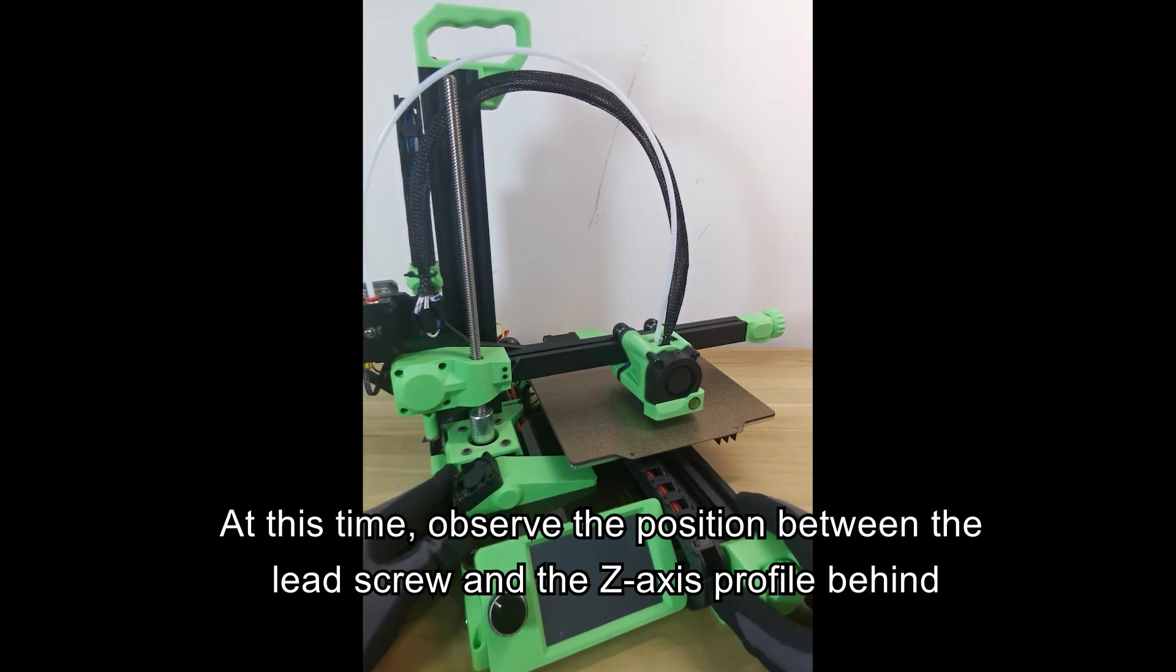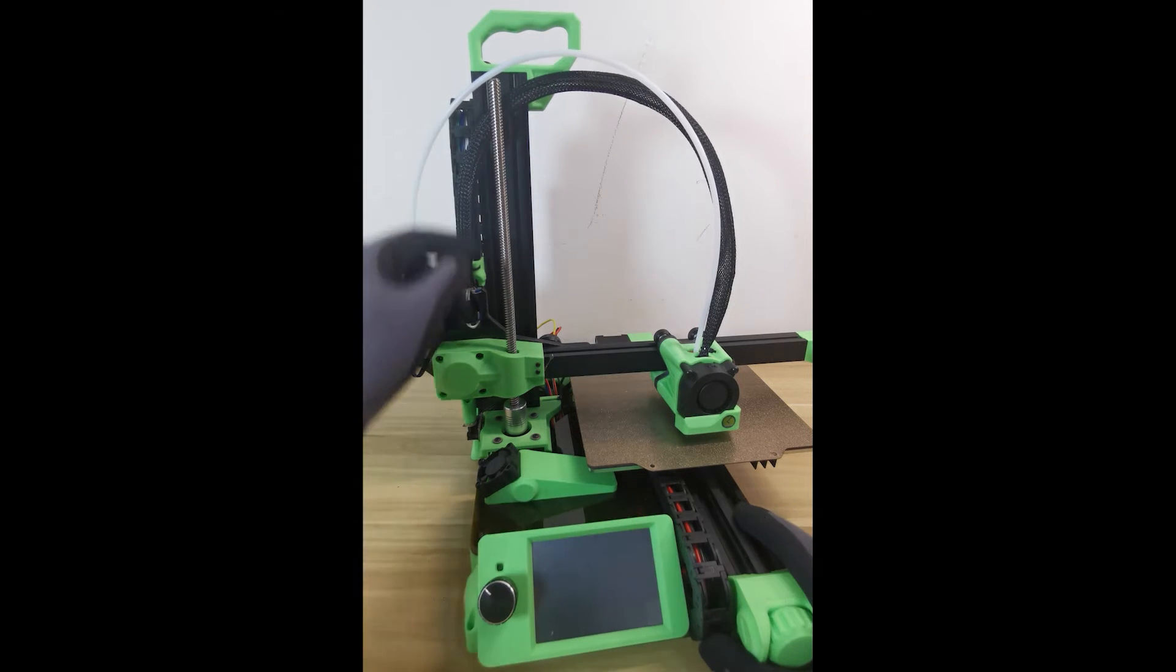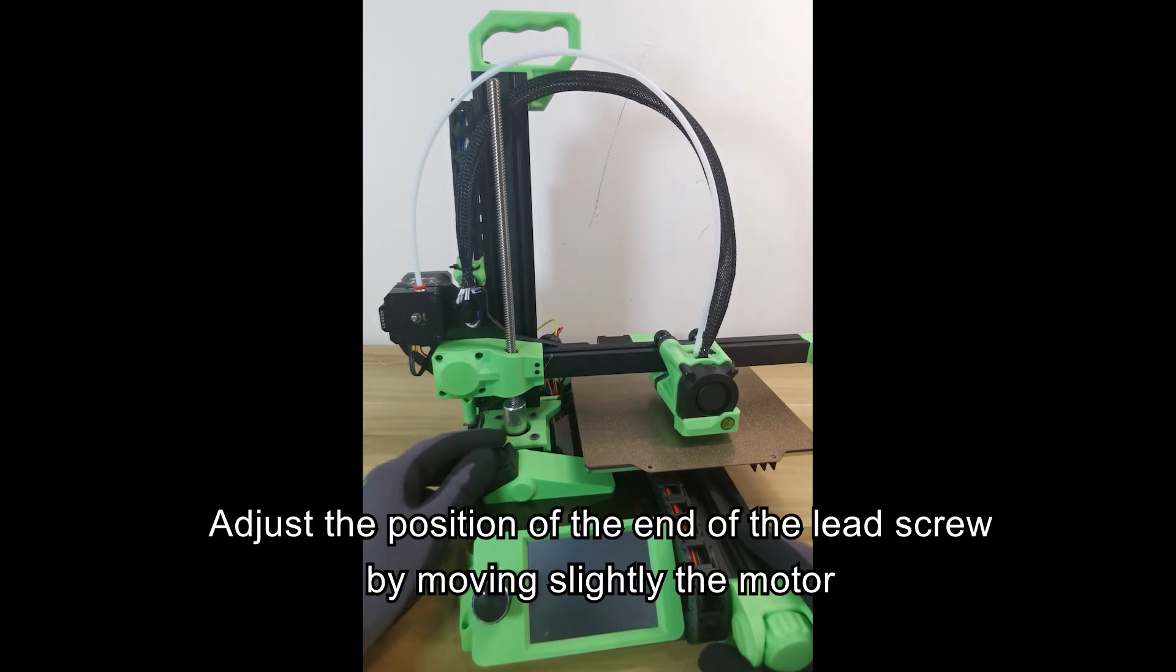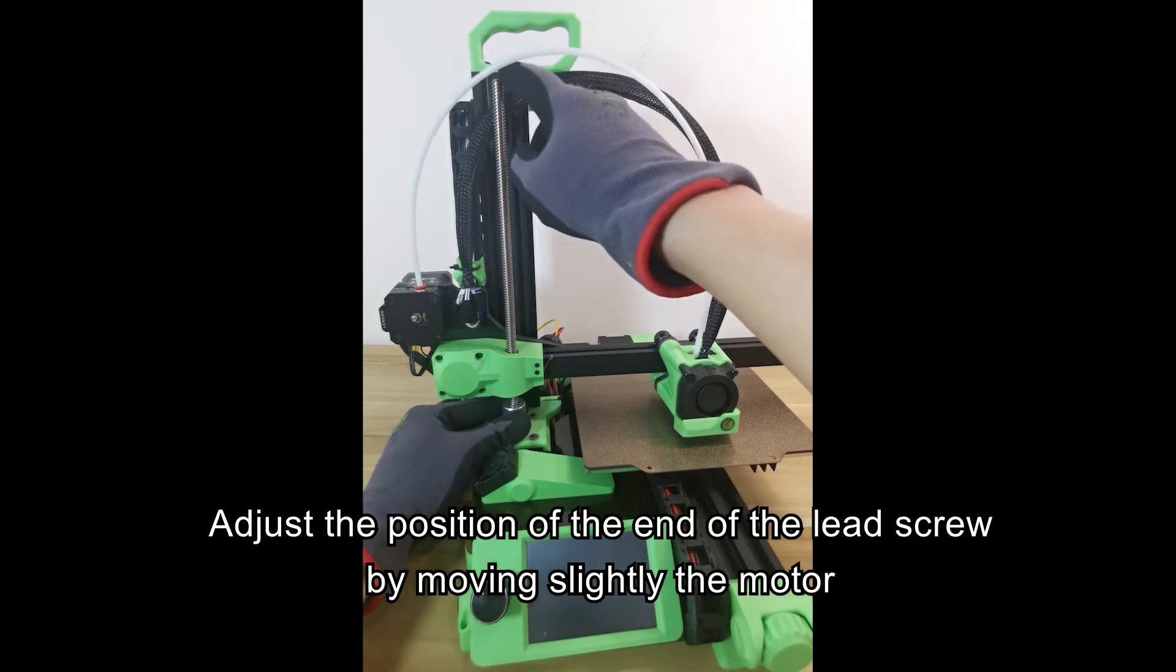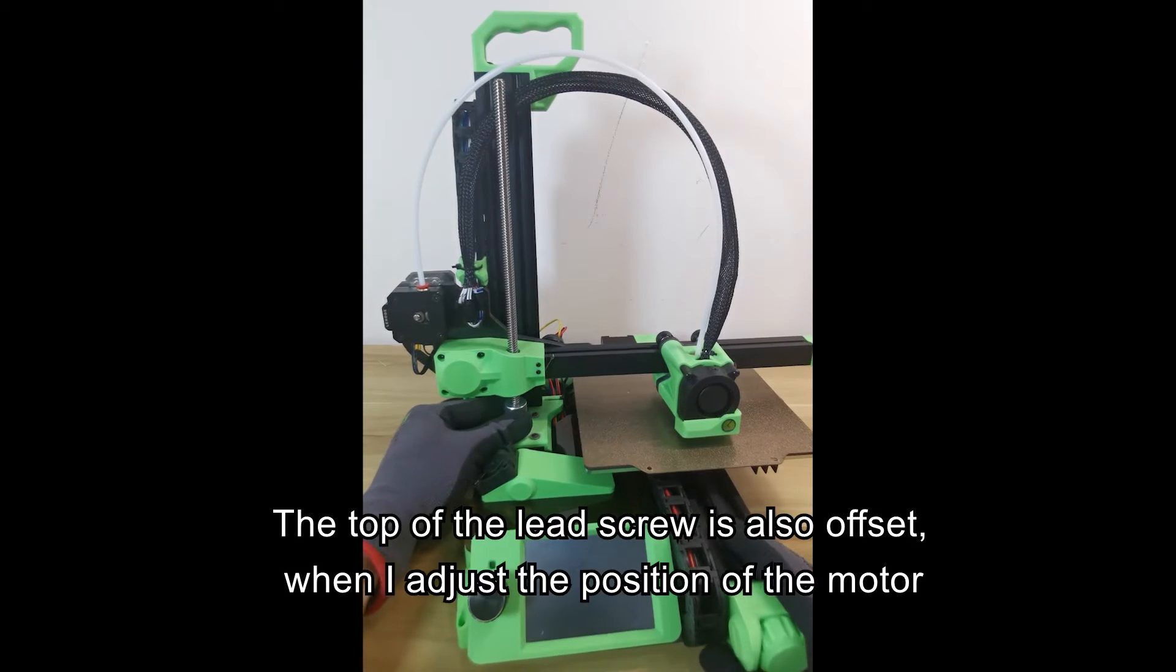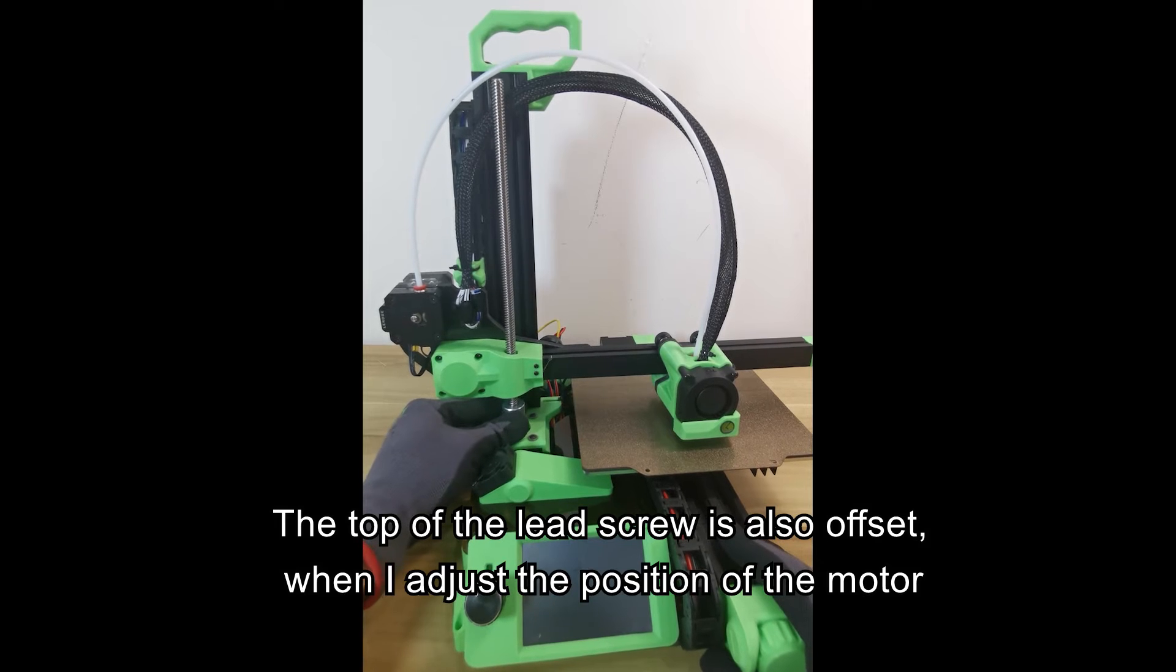At this time, observe the position between the lead screw and the Z-axis profile behind. Adjust the position of the end of the lead screw by moving the motor slightly. The top of the lead screw is also offset when I adjust the position of the motor.